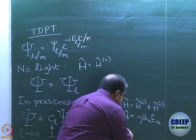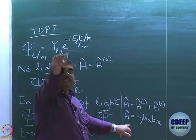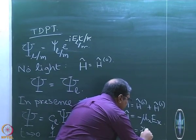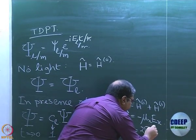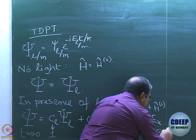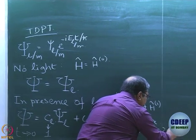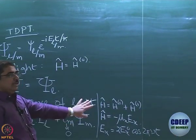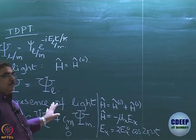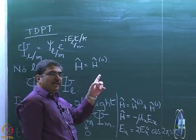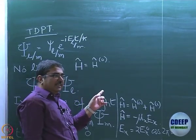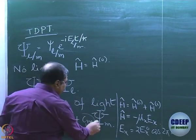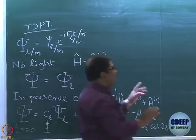How do I write E_x? E_x is written as 2 E_x0 cos(2π nu t), where nu is the frequency of light. We are going to use this expression today. Before that, let us redo what we had done in the last class and get an expression for time derivative of coefficient dCM/dt.